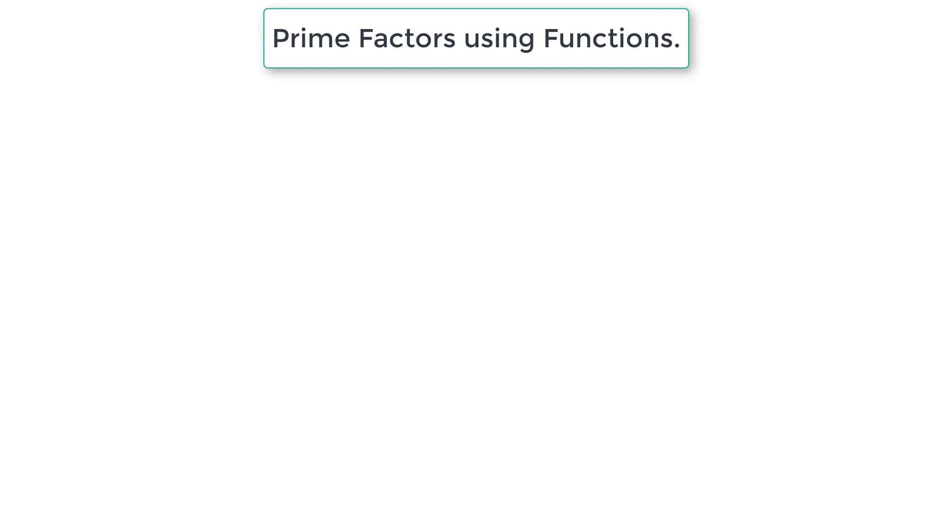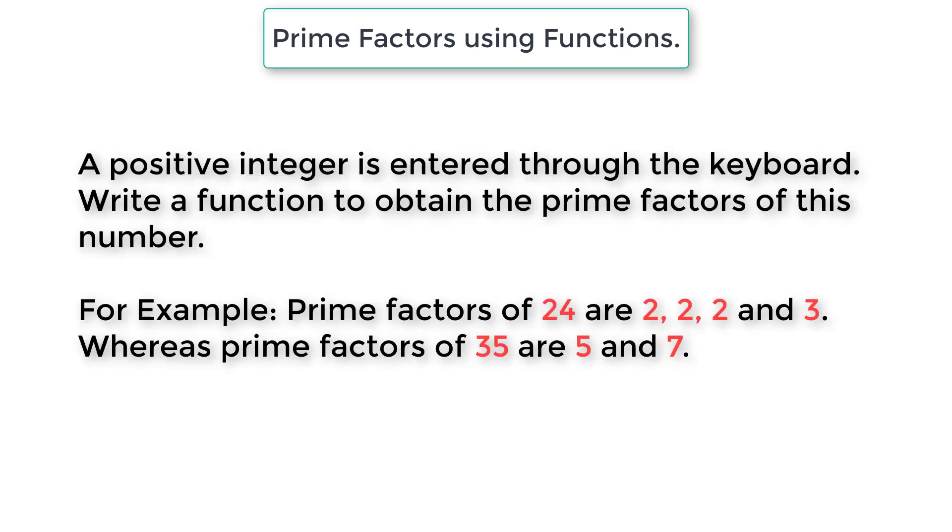Let's write a C program to print prime factors of a number using functions. The problem statement is a positive integer number is entered through the keyboard by the user. We need to write a function to obtain the prime factors of that user entered number.